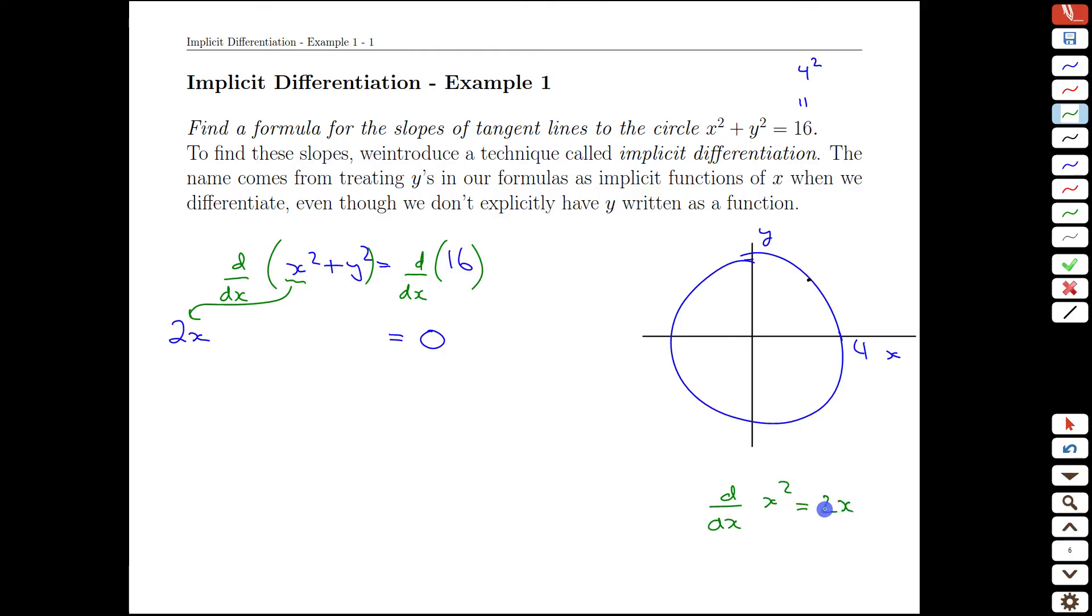We actually get the 2x and then remember there is a chain rule which would take the derivative of the inside function which is dx dx. Well what we've been saying all along is that derivative is just 1 so we essentially can ignore it.